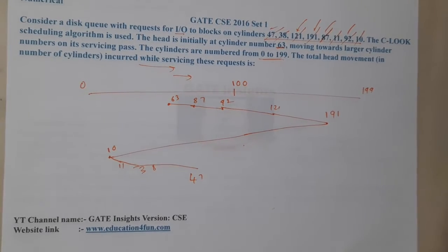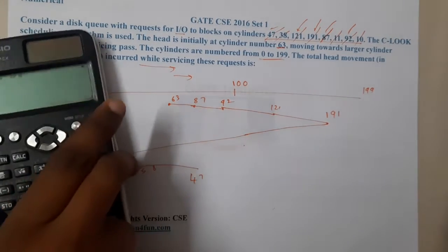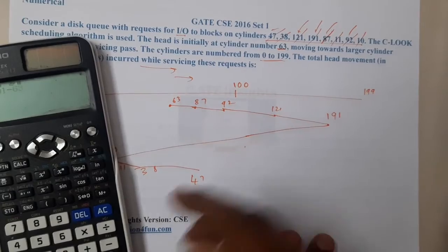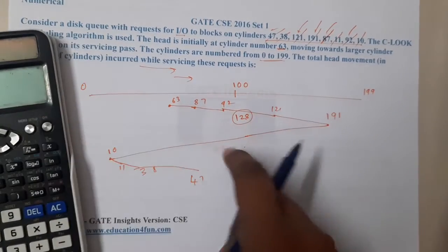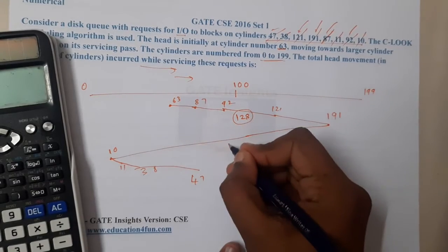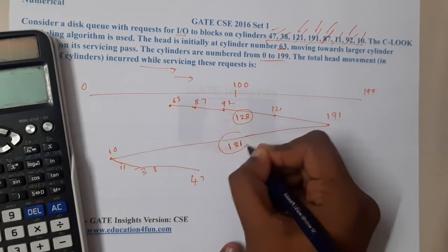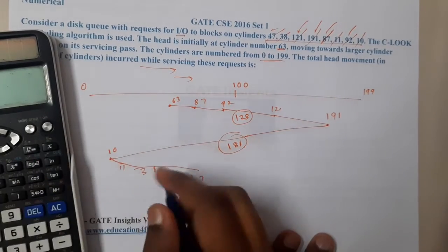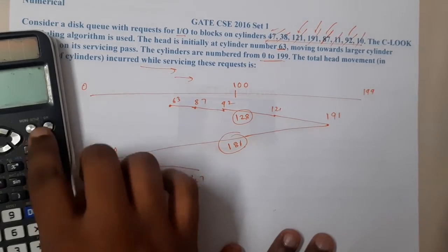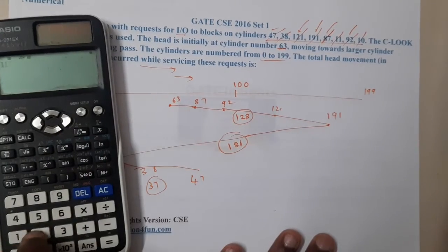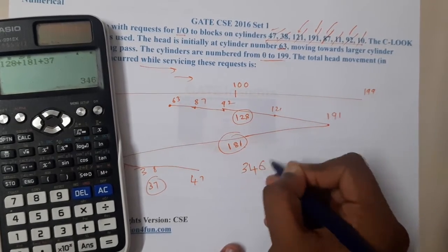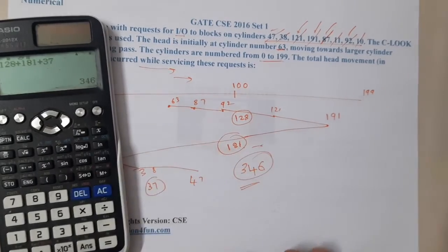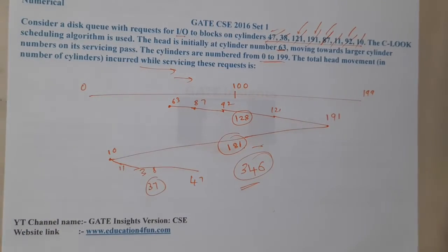Now we calculate the total head movement. From 63 to 191: 191 minus 63 equals 128. From 191 back to 10: 191 minus 10 equals 181. From 10 to 47: that is 37. Total: 128 plus 181 plus 37 equals 346 cylinder movements.